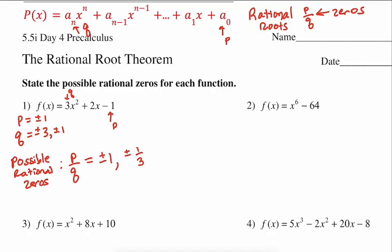That's all we're listing right now in the top four questions — we're not finding zeros yet. In number 2, the Q comes from the coefficient on x to the 6th, and the P comes from the constant 64. So our P has lots of options — lots of numbers that go into 64.